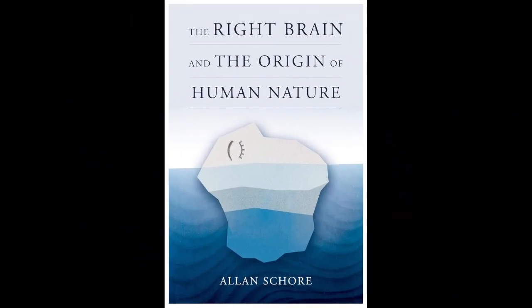This is Alan Shore, and I want to talk about how I came to write this book, The Right Brain and the Origin of Human Nature. I'm now at the point where I have published nine books, which have been translated into eight different languages. And this ninth book is The Right Brain and the Origin of Human Nature.